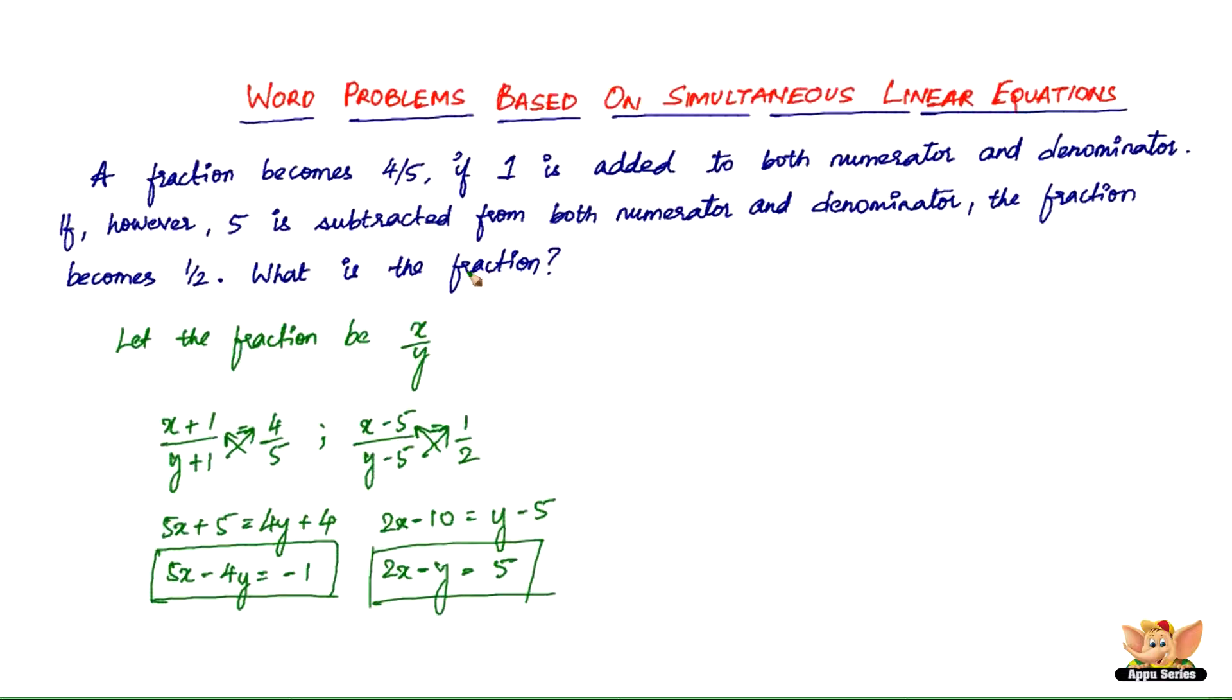Very simple problem. It just looks complicated. It looks lengthy. When you read it, it looks... But if you've got the steps, if you know what steps you've got to do, it's very, very easy. So now we've got 5x minus 4y equals minus 1 and 2x minus y equals 5.